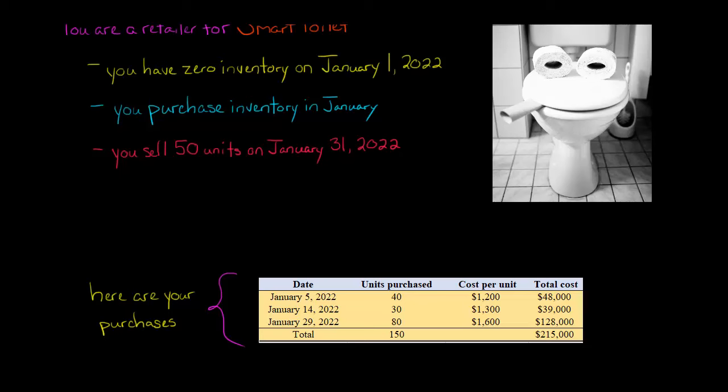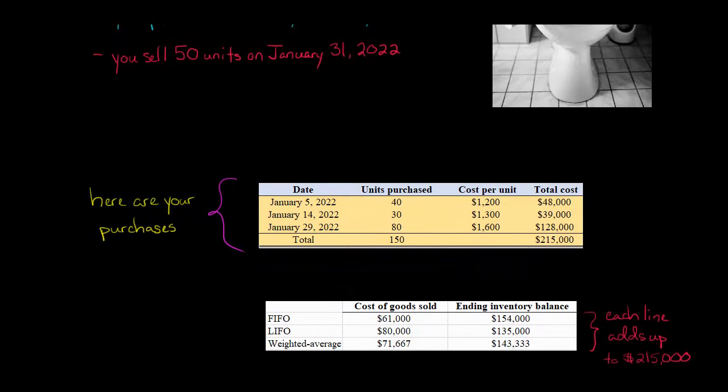So let's get into calculating cost of goods sold. We'll start with FIFO. Remember, FIFO is first in, first out. We have sold 50 units. So the first ones we're going to expense are our first purchases, which we have from January 5th. We bought 40 units. So we're going to have 40 times $1,200 per unit.